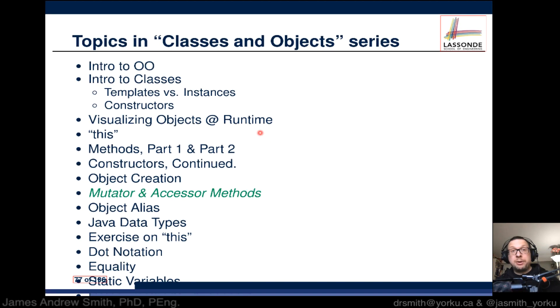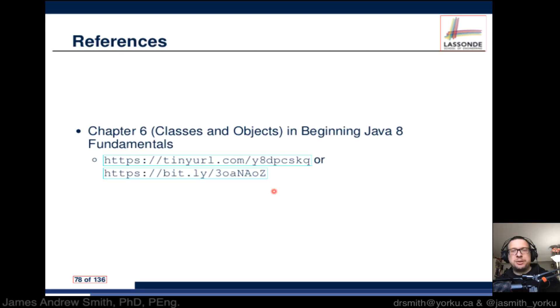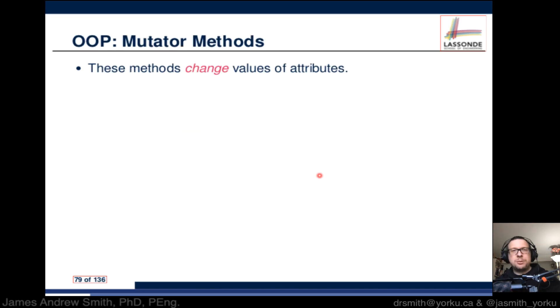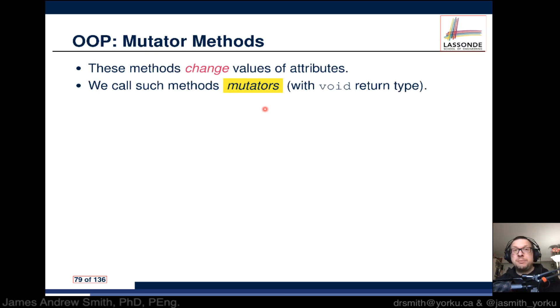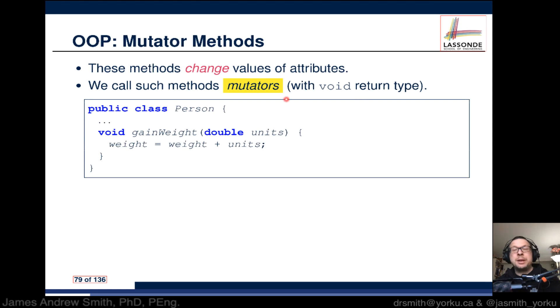Okay, hi everyone. Today we're going to be talking about mutators and accessors - basically methods that have really weird names, but you'll see why they're used. Mutator methods are methods that change values of attributes, and we call these methods mutators. They have a void return type.